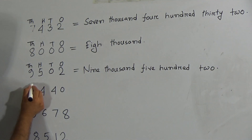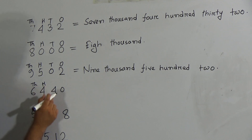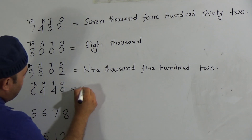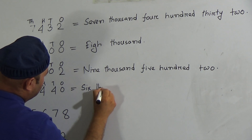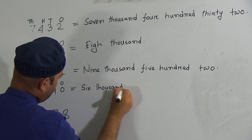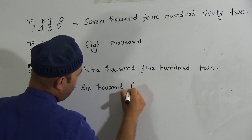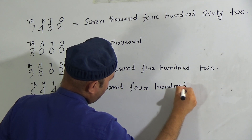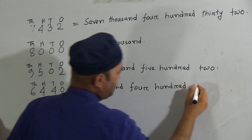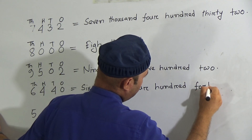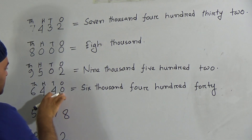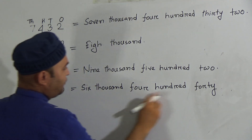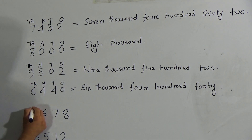The next number is 6,440. Six is in the thousand place, four is in the hundred place — so four hundred — and four is in the tens place, meaning forty, and zero is in the ones place. So in words this is six thousand four hundred forty.